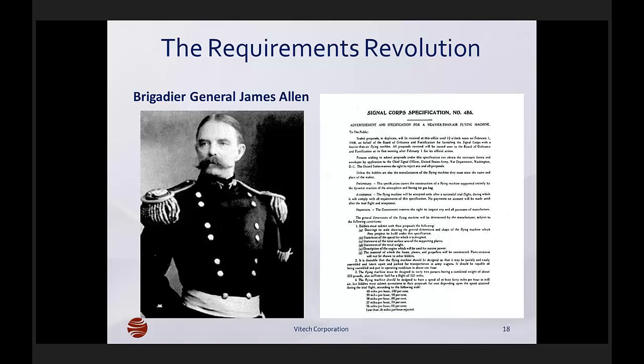General James Allen is an interesting guy. He was a very progressive general back in the early 1900s — over a hundred years ago — and he was a general in the US Army Signal Corps. One of the things they recognized very early on with the development of the Wright Brothers' aircraft was that they could use this technology to provide reconnaissance and surveillance on the battlefield. In 1907, just four years after the Wright Brothers' first flight at Kitty Hawk, General Allen decided to initiate a government procurement of the flying machine.